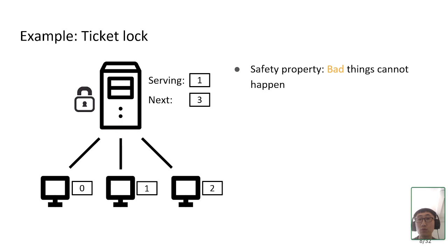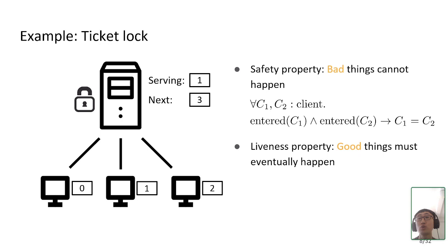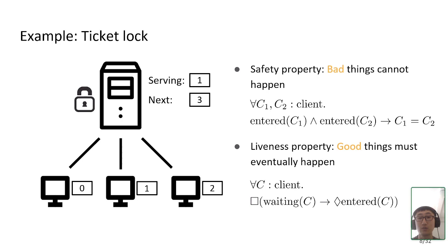For such a protocol, we need to ensure the safety property, which says bad things cannot happen. For ticket lock, the safety property says that for any two clients C1 and C2, if they both enter the critical section, they must be the same client — in other words, this guarantees mutual exclusion. On the other hand, we also need to ensure the liveness property, which says good things must eventually happen. For ticket lock, we need to ensure that any client waiting for the lock will eventually enter the critical section, rather than waiting forever.